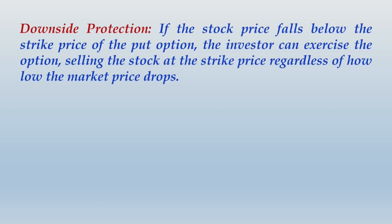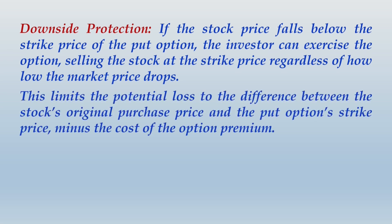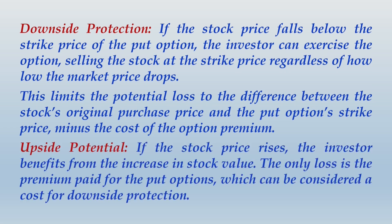How does this protective put provide downside protection? If the stock price falls below the strike price of the put option, the investor can exercise the option, selling the stock at the strike price regardless of how low the market price drops. This limits the potential loss to the difference between the stock's original purchase price and the put option strike price, minus the cost of the option premium. Upside potential: if the stock price rises, the investor benefits from the increase in stock value. The only loss is the premium paid for the put option, which can be considered as the cost for downside protection.